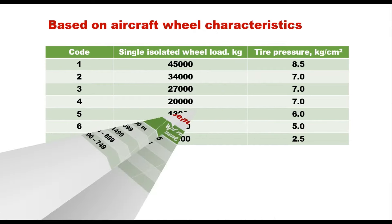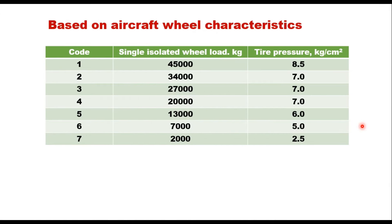Another consideration is aircraft wheel characteristics. Aircraft wheels are an important component of the landing gear system — they support the entire weight of the aircraft during landing, takeoff, and taxiing. Based on wheel load and tire pressure, FAA classifies airports into seven categories numbered 1 to 7. When a single isolated wheel load is 45,000 kg and tire pressure is 8.5 kg per cm², it is given Code A. Code 7 is given for airports serving aircraft with a single isolated wheel load of 2,000 kg and tire pressure of 2.5 kg per cm² — very small aircraft generally used for training purposes.